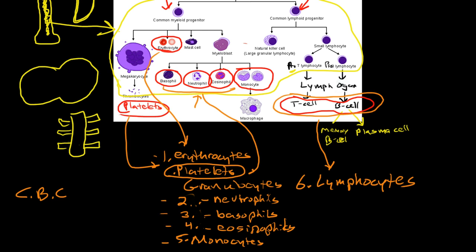basophils, eosinophils, monocytes, and lymphocytes. So six different cells and then the platelets are cell fragments.